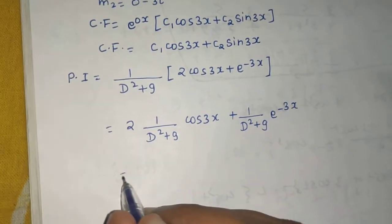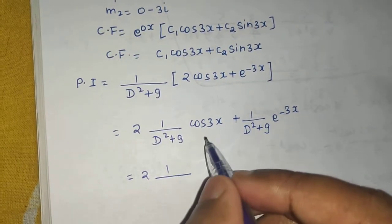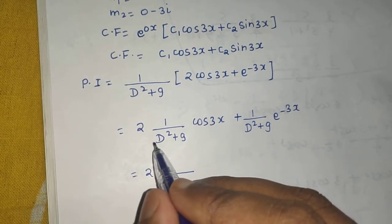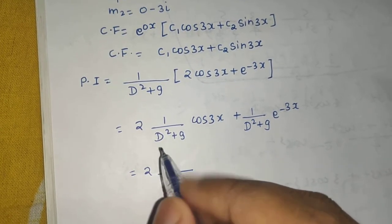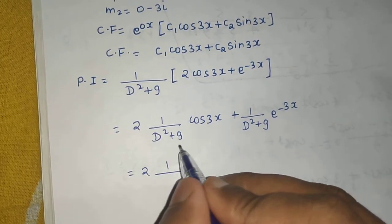Now replace D squared by minus of a squared. So when you replace this by minus of 9, you will get a 0. So what we do in that case is differentiate this denominator.